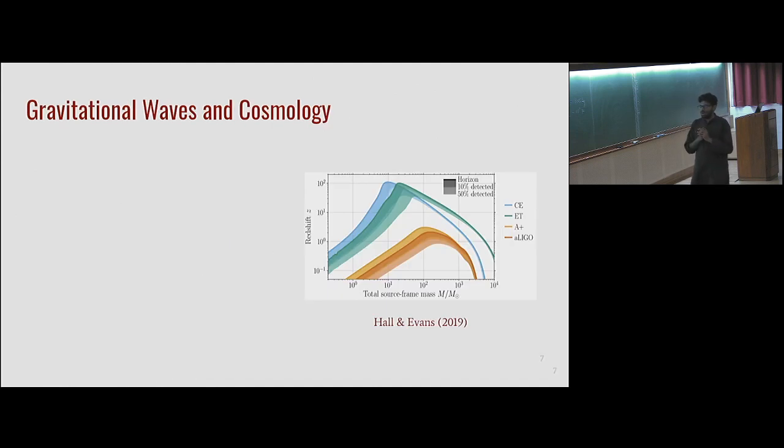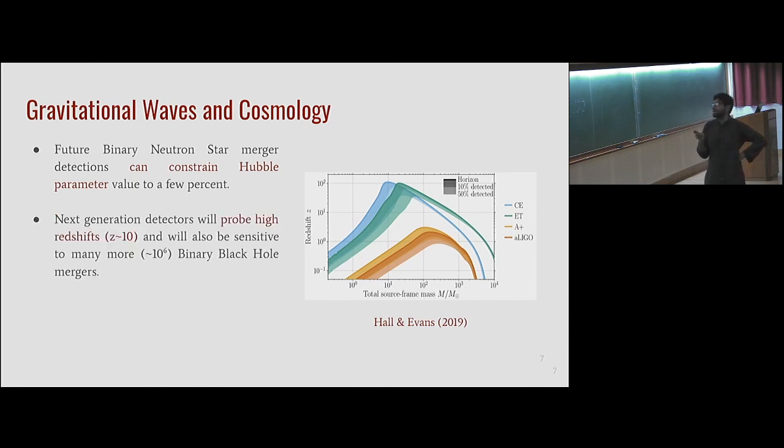So far I've said nothing about gravitational waves. Why are gravitational waves coming into the picture here? The binary neutron star event actually constrained the Hubble constant to about 15 percent. Future binary neutron star merger detections can actually constrain the Hubble constant to about a few percent, comparable to the current constraints from the CMB or the supernovae. Next generation detectors—by next generation I mean detectors that will be online in around 10 to 15 years—will actually probe very high redshifts, z equal to 10, which basically means we will probe all the black holes merging in the universe or all the binary neutron stars merging in the universe to that redshift. They will be also sensitive to many more black hole mergers, around a million per year. Right now we detect binary black holes at the rate of one per week. We'll be detecting binary black holes at the rate of one per minute in the next 15 years.